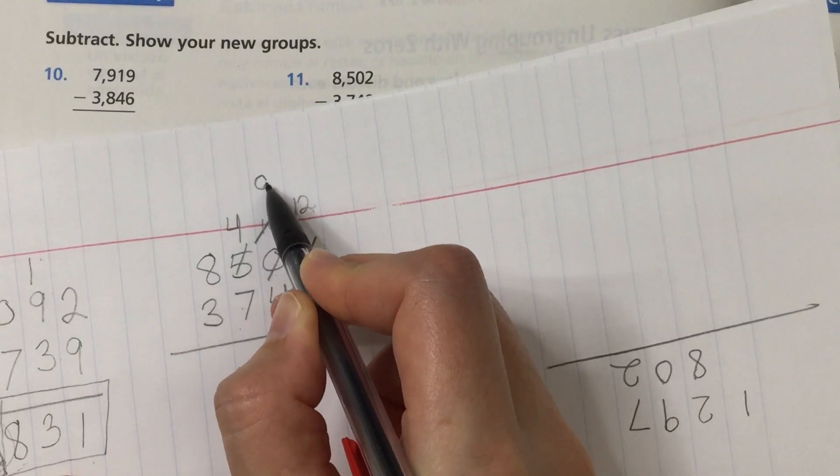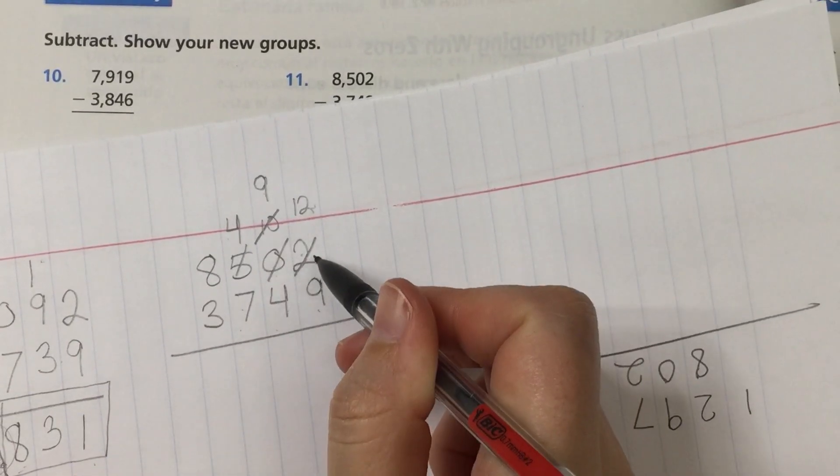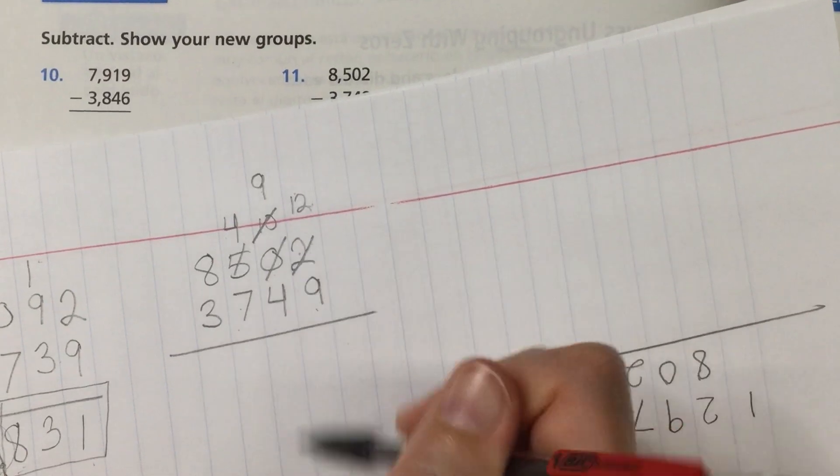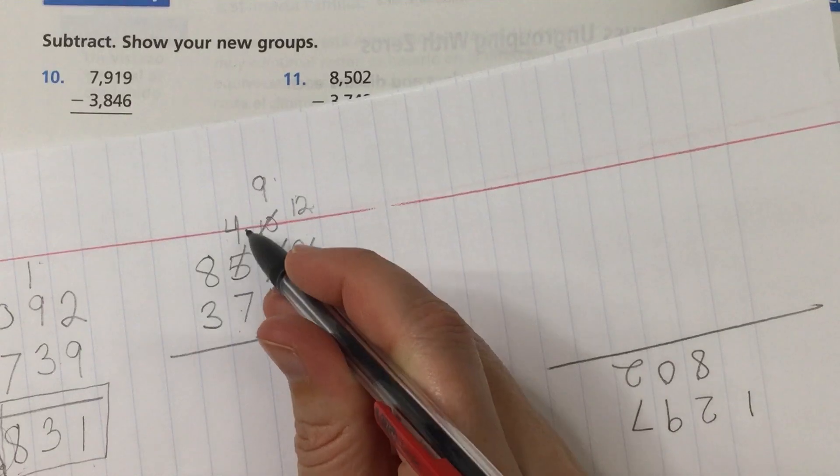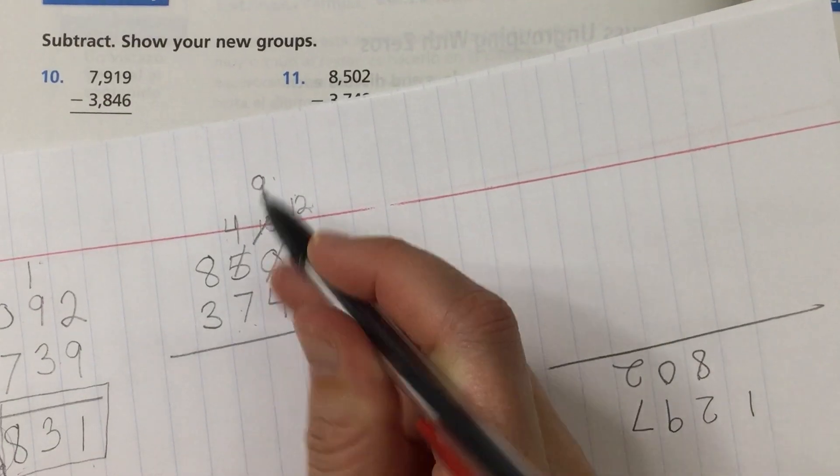So I change that 10 to a 9 and then now I probably should have waited to write the 12 over the 2. There it is. 12 minus 9 is possible. 9 minus 4 is possible. 4 minus 7 is not possible.